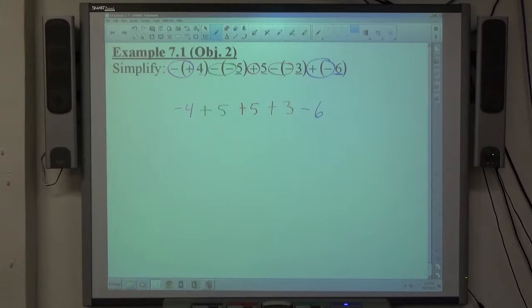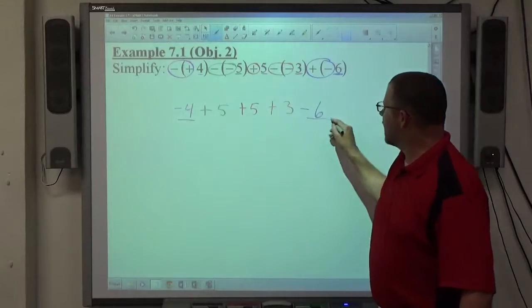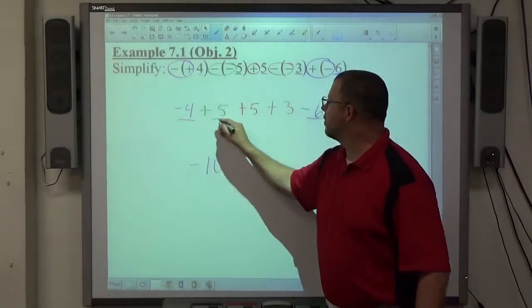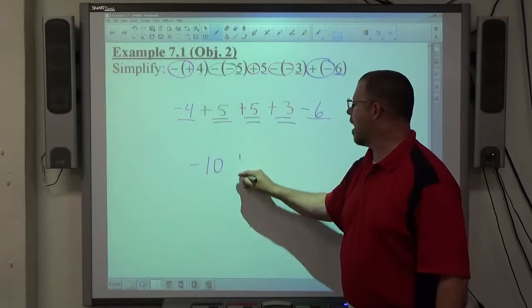Get the parentheses out of the problem as soon as possible. So you're looking at just pluses and minuses. Then, negatives add to make a negative number. Positives add to get a positive number.